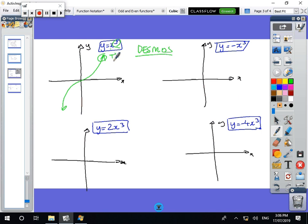So for instance, 1 cubed is 1, 2 cubed is 8, minus 2 cubed is minus 8. So that's how I got the graph.